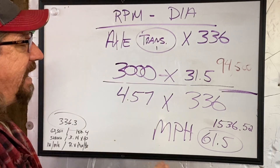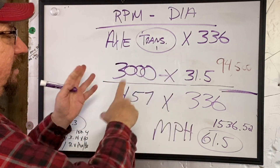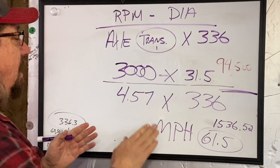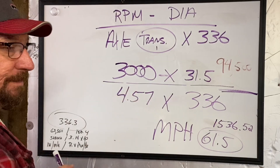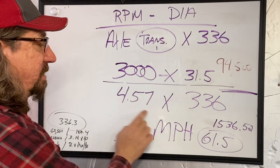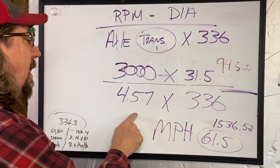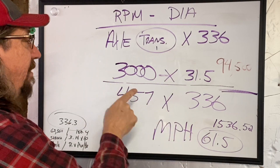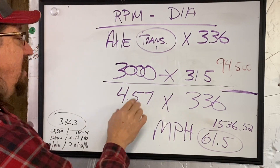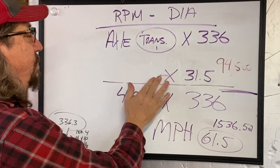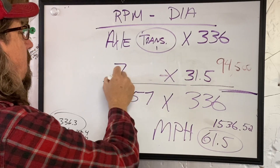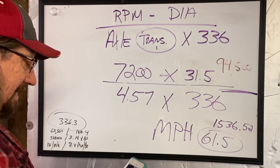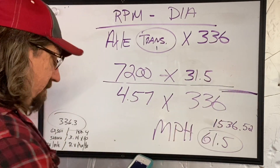The cool thing about this is there are other ways to calculate it, but that's not my point for this video. If I wanted to change and see what my car would do with a 4.11 gear, I can do the math and see that my speed goes up. Or I can go to a 4.90 gear and see that my speed drops. Now, I know my engine redlines at 7,200 RPM — I have a 7,200 RPM chip in there — so let's do that math. I replace 94,500 with 7,200 times 31.5.